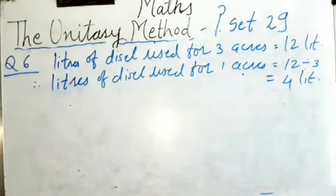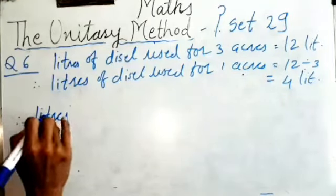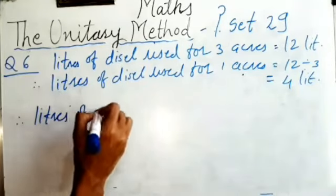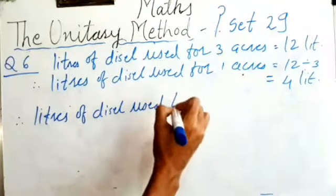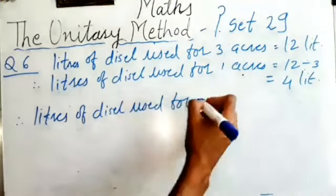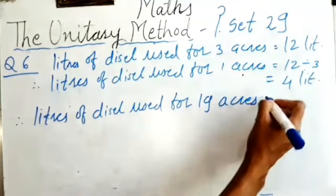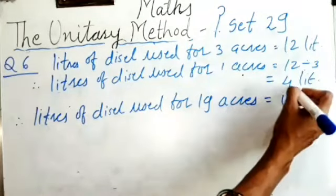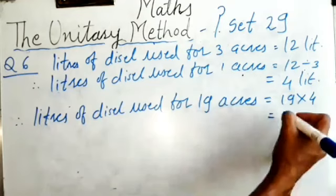Therefore, to plough 19 acres of land, litres of diesel used for 19 acres will be: multiply 19 by 4, and we get the answer — 76 litres.